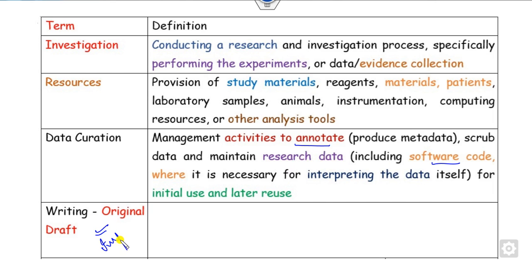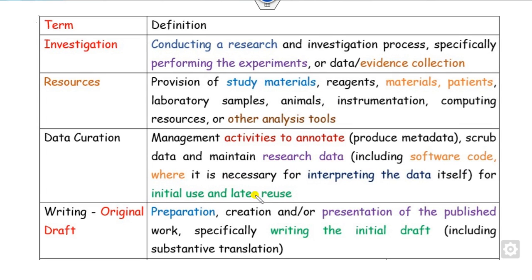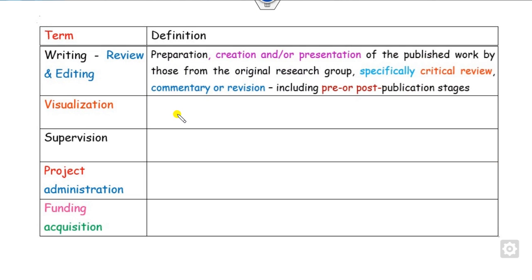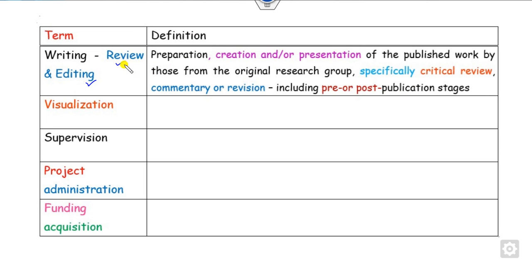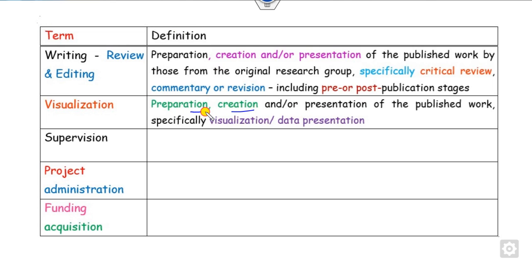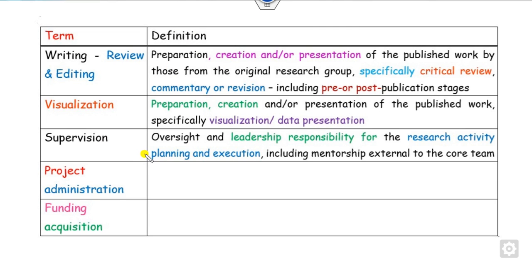Writing - original draft: this is most important — whoever writes the original draft of the paper, you list them under original draft. Writing - review and editing: once the original paper is written, whoever reviews it, improves the manuscript presentation — that is listed as writing, review and editing. Visualization: whoever creates or prepares the published work, especially for data presentation — you list under visualization. Supervision: whoever supervises, under whom all the results are produced, is listed as supervision.